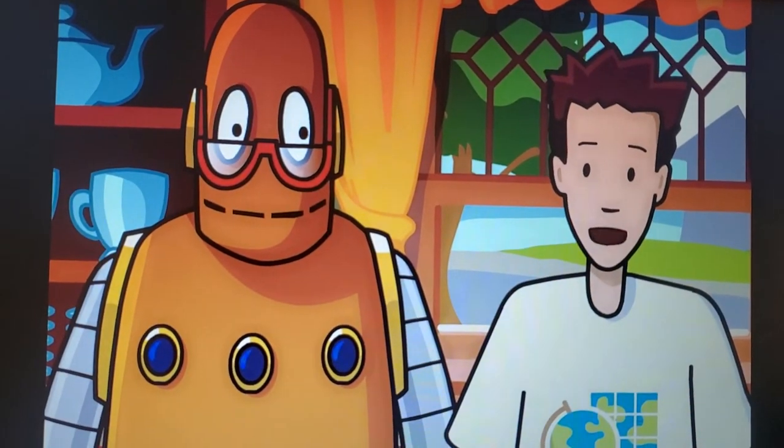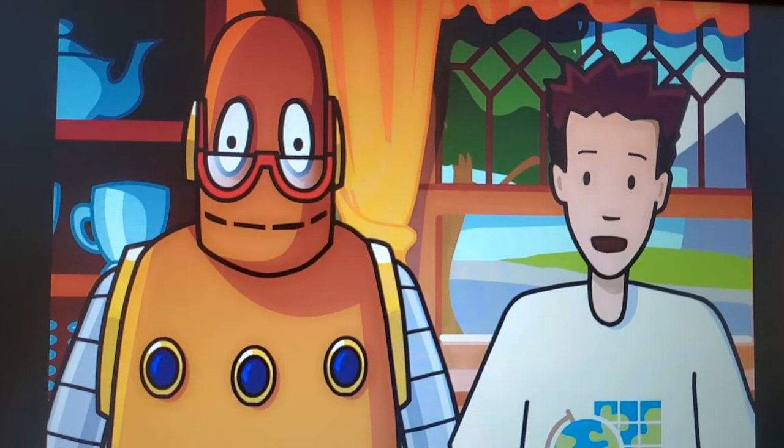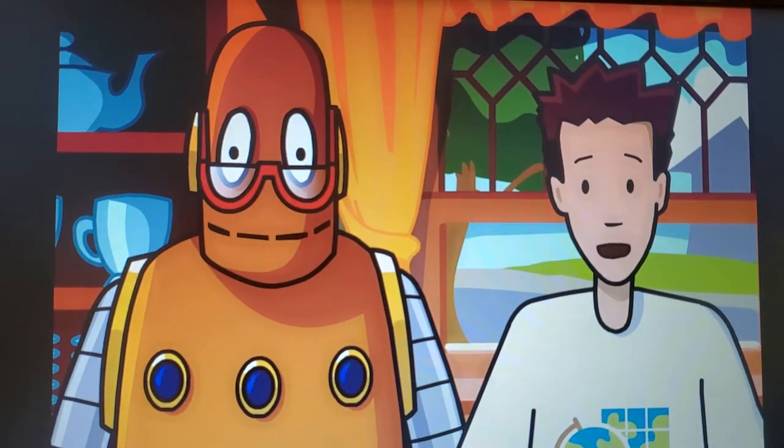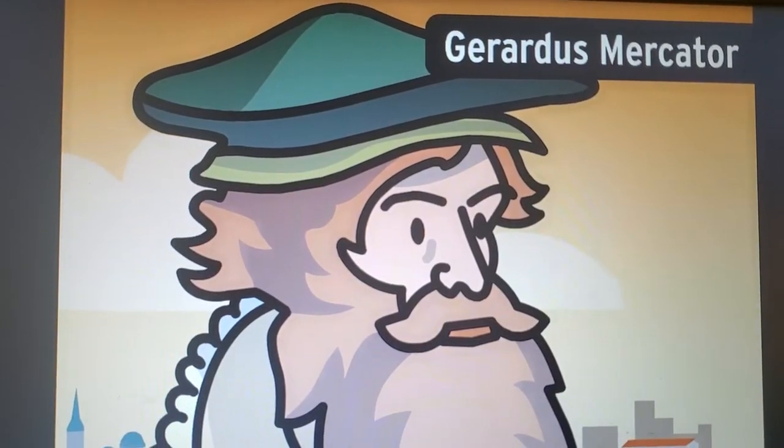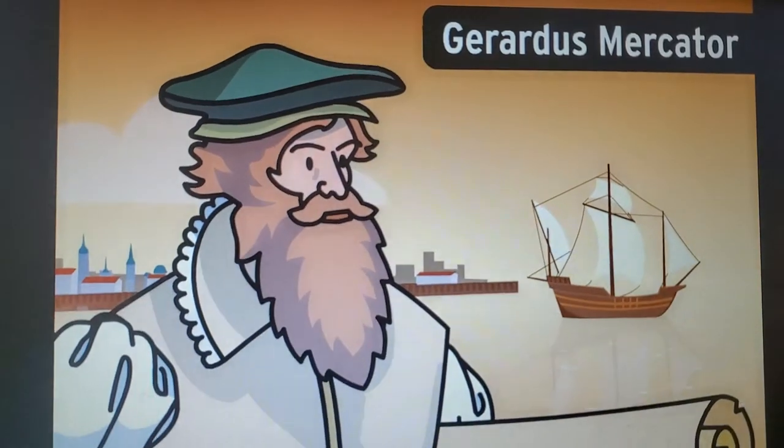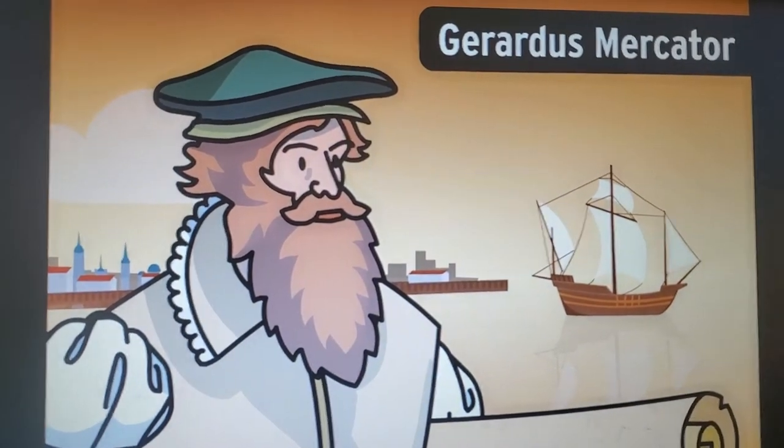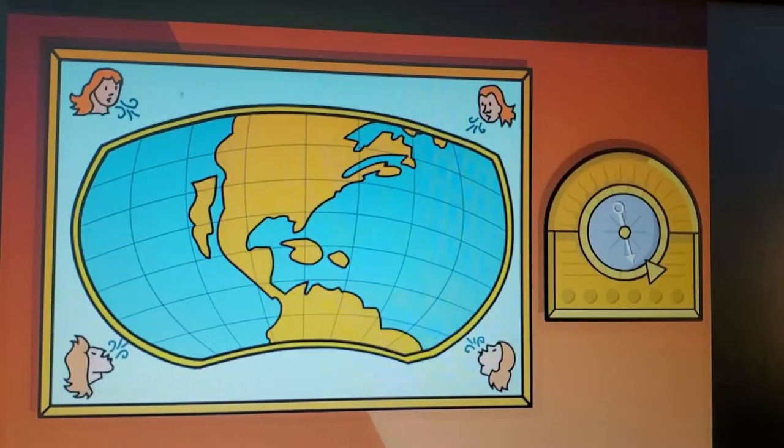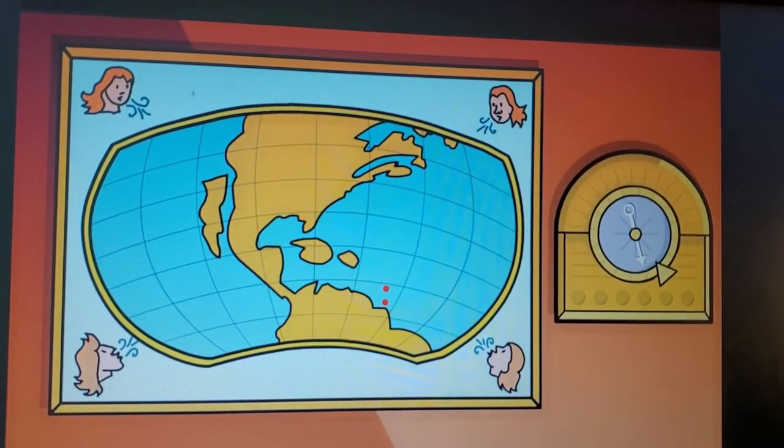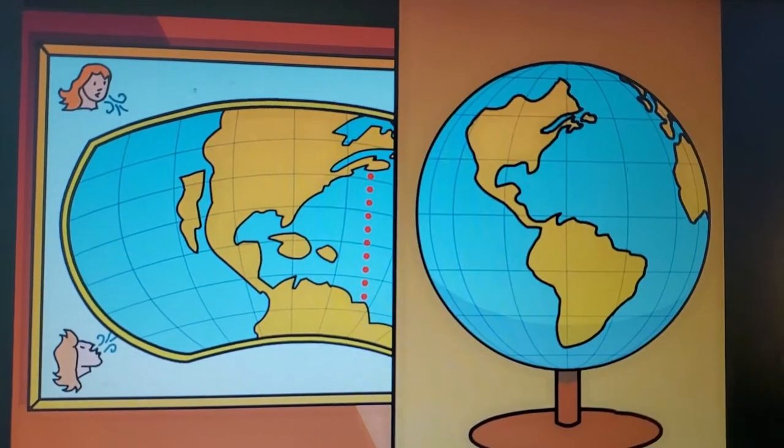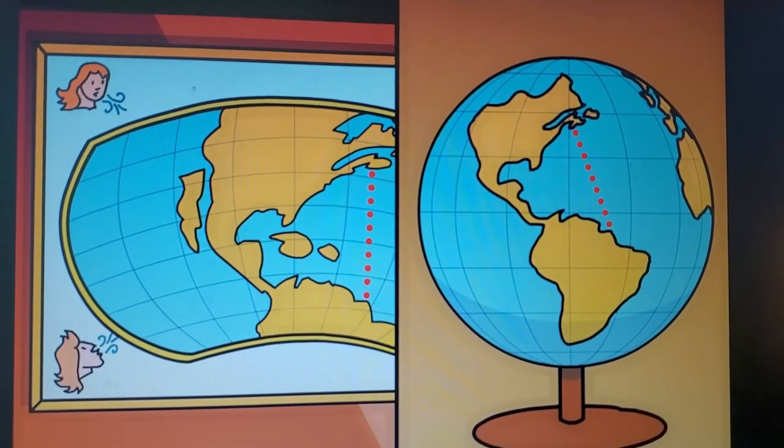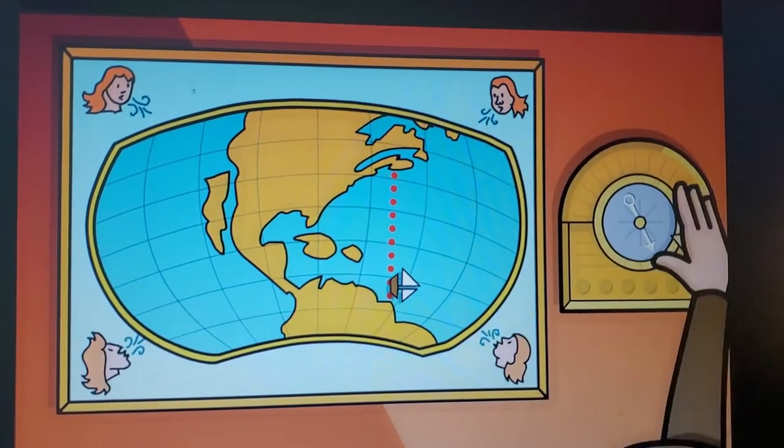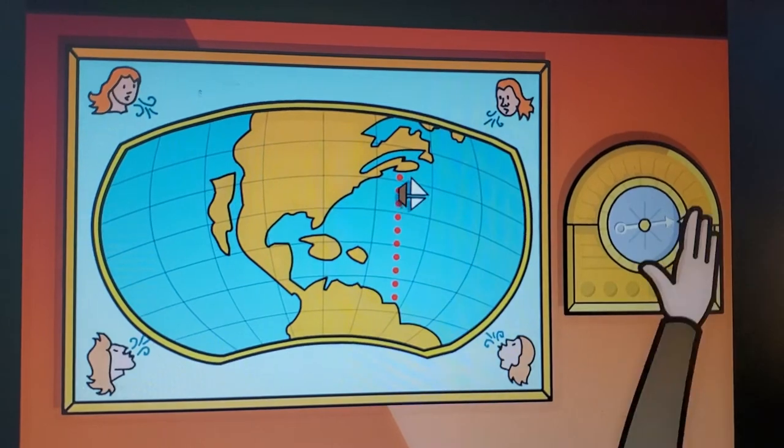The map we're most familiar with is a cylindrical projection created way back in the 16th century. Gerardus Mercator, a European cartographer, wanted to improve the maps used on ships. The most popular ones at the time distorted direction. So your destination on the map might look like it's directly north of you, when in reality, it's north and a little west. To stay on course, navigators had to keep resetting their compass angle.